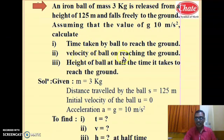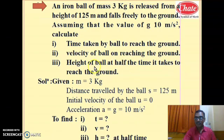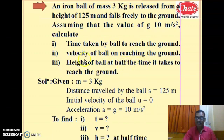Second, what is the final velocity of the ball on reaching the ground? It is a free fall condition, so initial velocity is zero, and we have to calculate the final velocity. Third, the height of the ball at half the time it takes to reach the ground — whatever the total time taken by the ball, we take the half value, and for that half time we calculate the height of the ball.